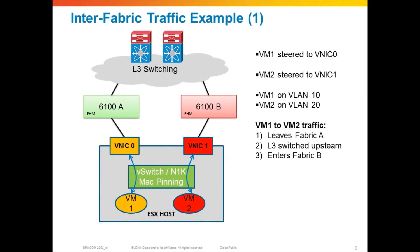Let's take a look at some inter-fabric traffic examples with a UCS deployment, and then we'll move on to some of the recommended topologies. Here's one example of inter-fabric traffic. I've got an ESX host with multiple VMs, and on that ESX host I'm running a software-based switch like the vSwitch or Nexus 1000V. I could have multiple adapters on that host - vNIC0 and vNIC1 - where vNIC0 is going to Fabric A and vNIC1 is going to Fabric B. That's a pretty typical setup.